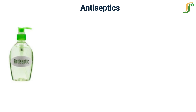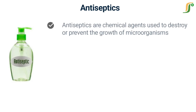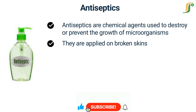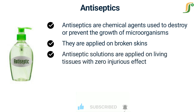Now let us know about antiseptics. Antiseptics are chemical agents used to destroy or prevent the growth of microorganisms that could cause infections or diseases. They are applied on broken skin to kill disease-causing microorganisms that might have infected the areas or keep them away from these areas. Antiseptic solutions are therefore meant to be applied on living tissues with zero injurious effect on the body surface where they are applied.